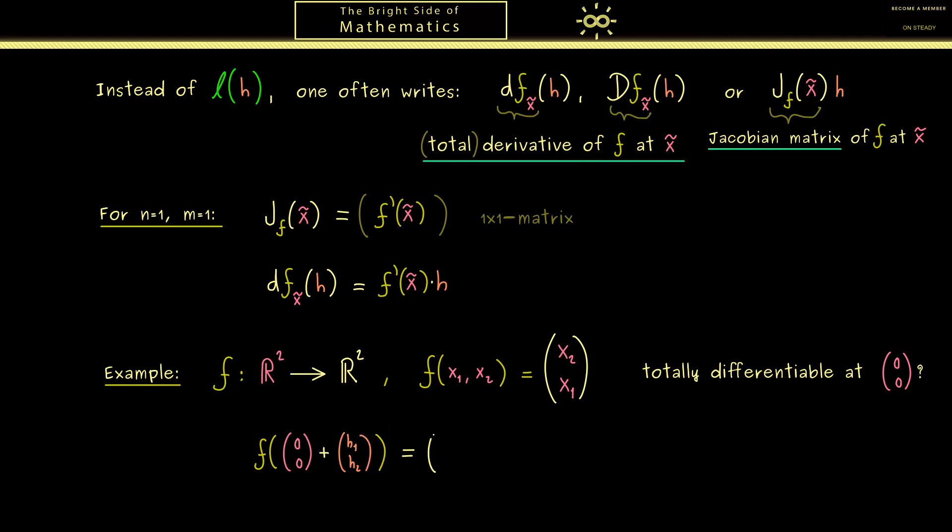And now we already know the result, it's given by the flipped components. In other words, here we have h2, h1. However, now we want to rewrite this as a linear approximation. So first what we need is f of x tilde, so f of 0, 0, which we can add without a problem because it's already 0. And now let's write this thing here as a matrix vector multiplication. Hence the question is which matrix do we need to send this vector to the vector h2, h1. Indeed this is not so hard, it's 0, 1, 1, 0.